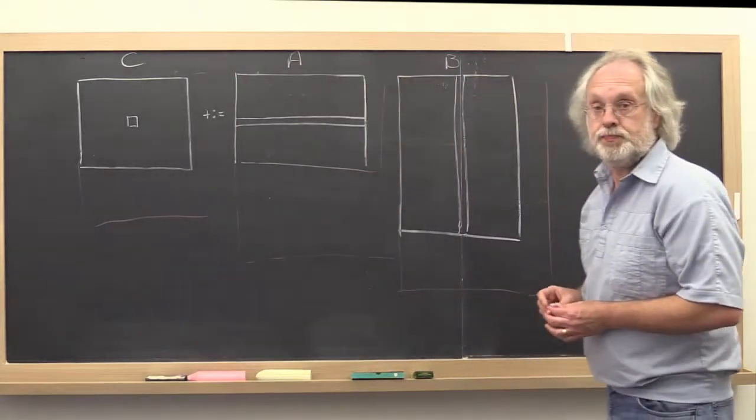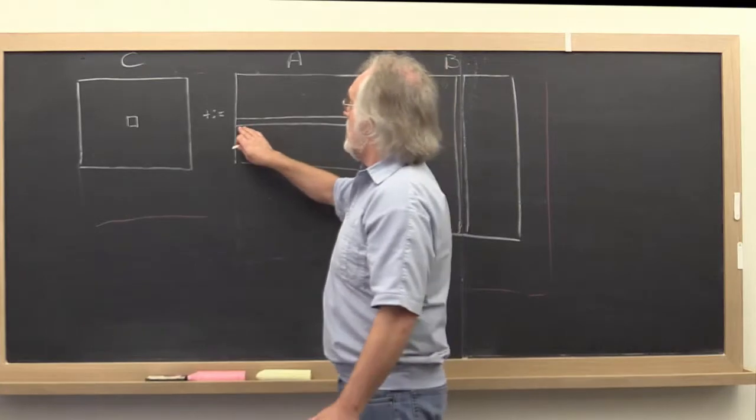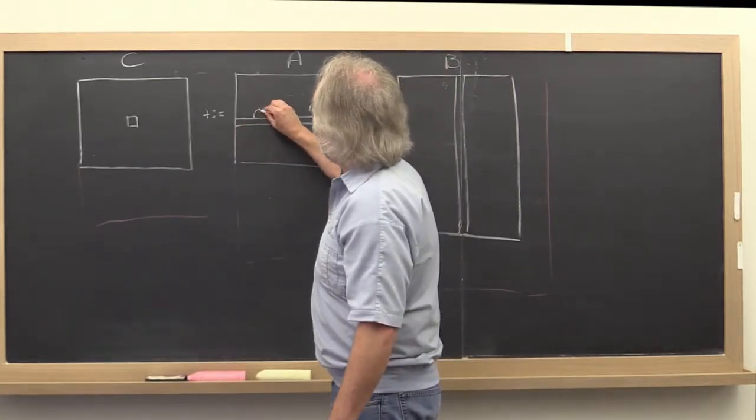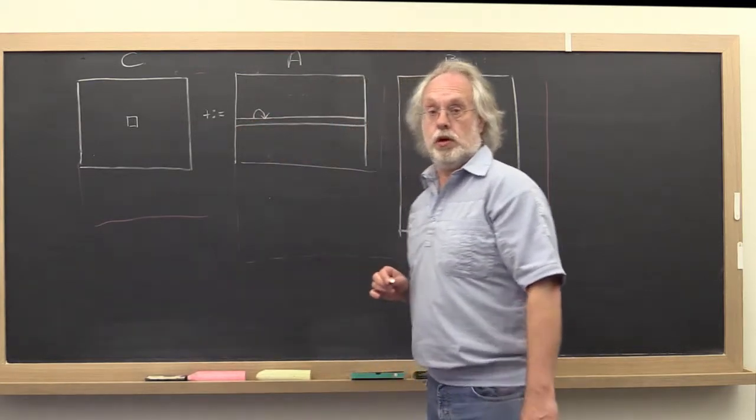So we need to be concerned when we implement a dot product routine what the stride is that gets you from one element to the next within a row of A.